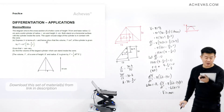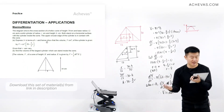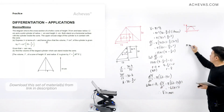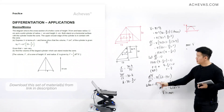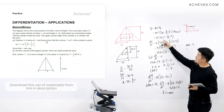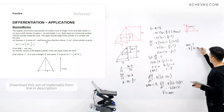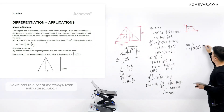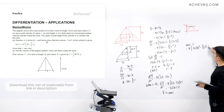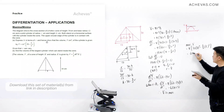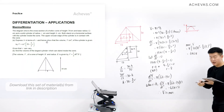The maximum volume occurs at r = 8. Substituting into V = π(30r² − (5/2)r³): V = π(30 × 64 − (5/2) × 512) = 640π. So the maximum possible volume of the cylinder is 640π.